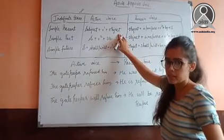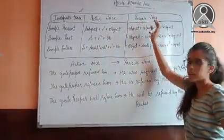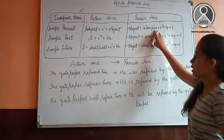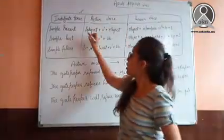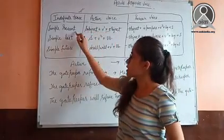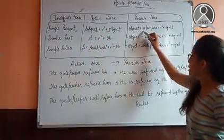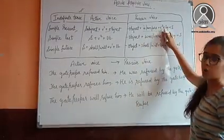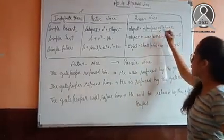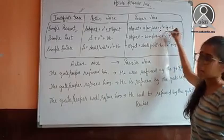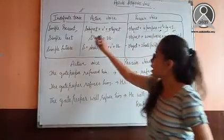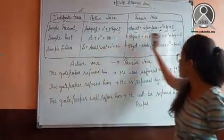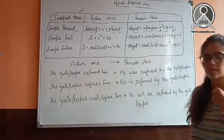So what we need to do is we have to reverse it. The object is here at the last. We have to put it at the very beginning in the passive voice. So object plus is/am/are. If the active voice is in simple present, we have to put is/am/are, the helping verb, then the verb third form, then by. We have replaced subject with the object and object with the subject. I hope this is clear.